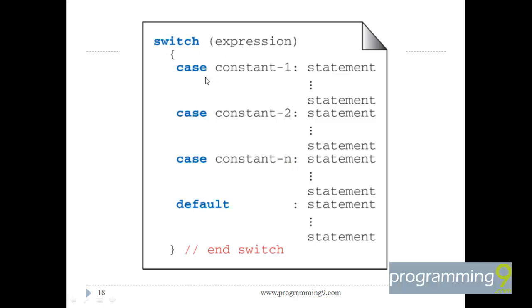The switch syntax uses an expression that yields a result — constant 1, constant 2, through constant n. If the expression matches constant 1, it jumps directly to case constant 1 and executes the appropriate statements. If none of the constants are satisfied, it jumps directly to the default block.